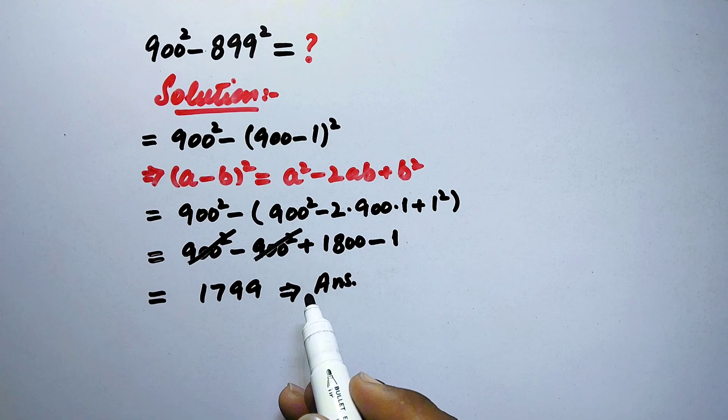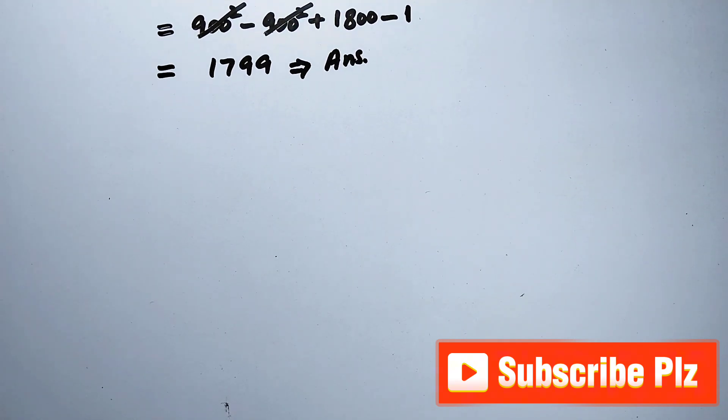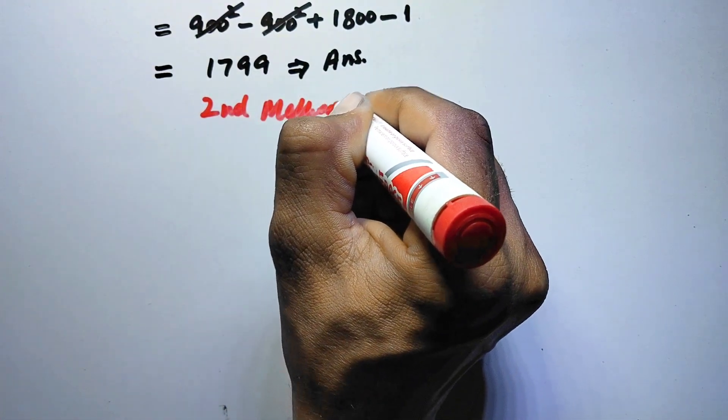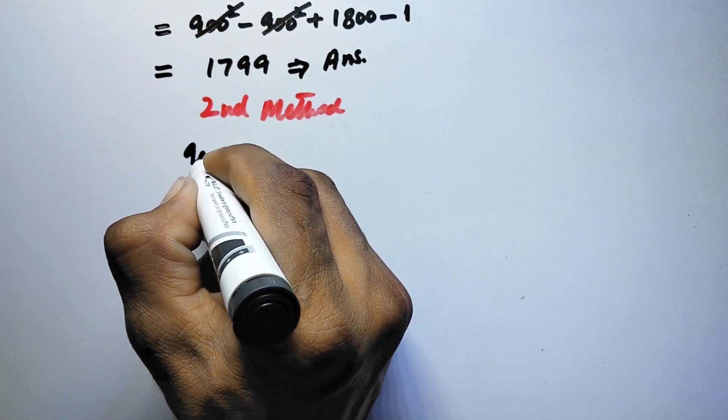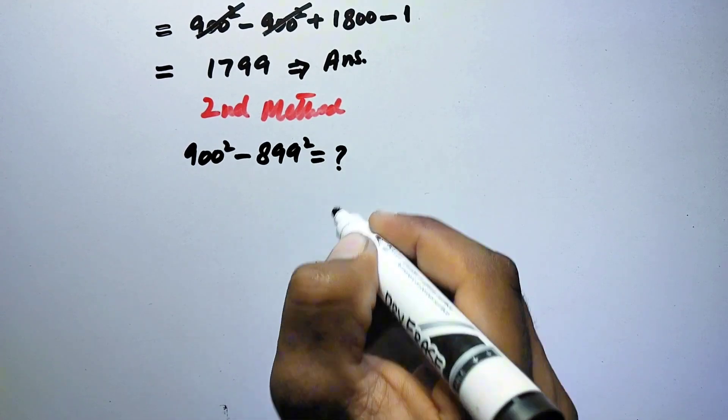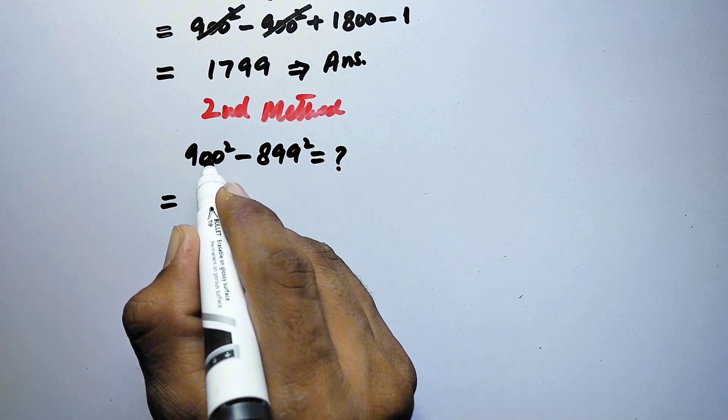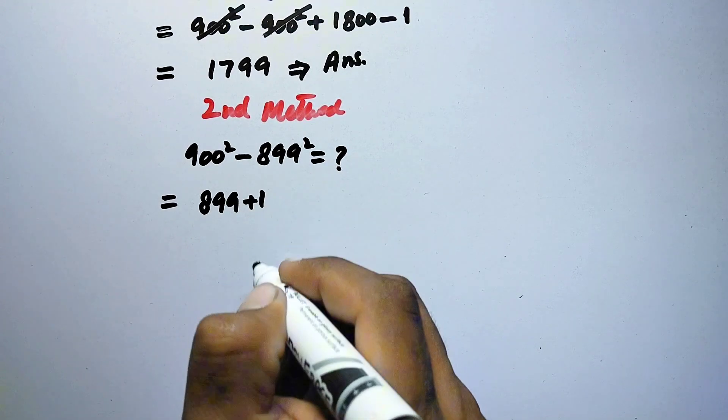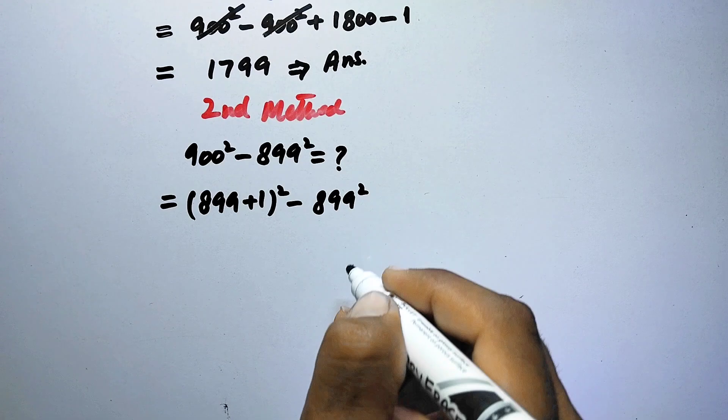And now here we will solve this problem by another method. So here is the second method. The problem is 900² - 899² equal to what? So here it may be equal to (899 + 1)² minus 899².